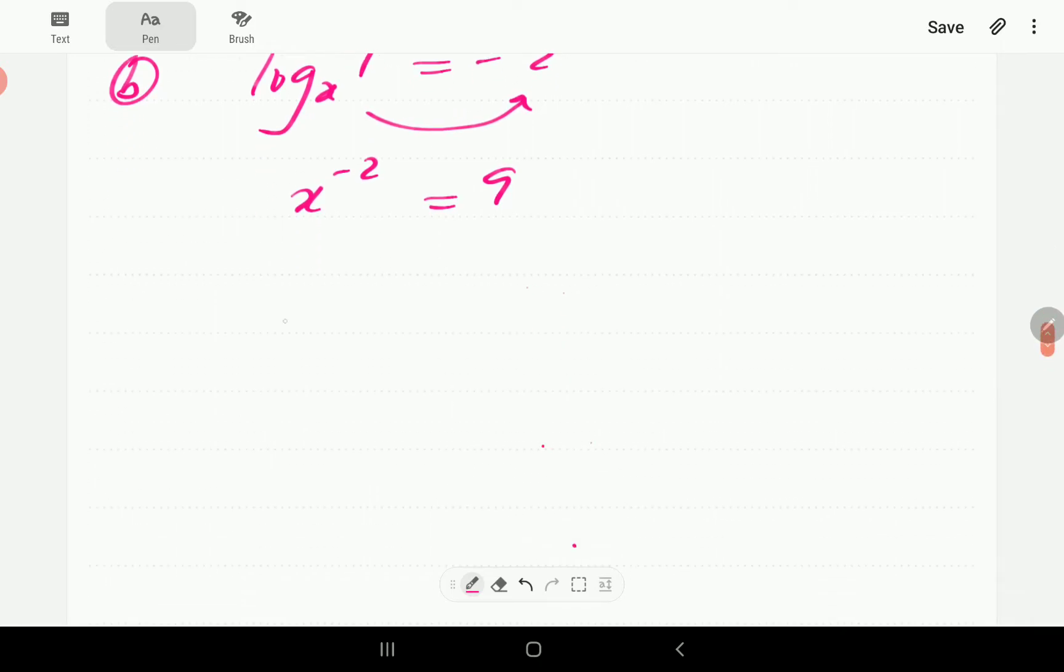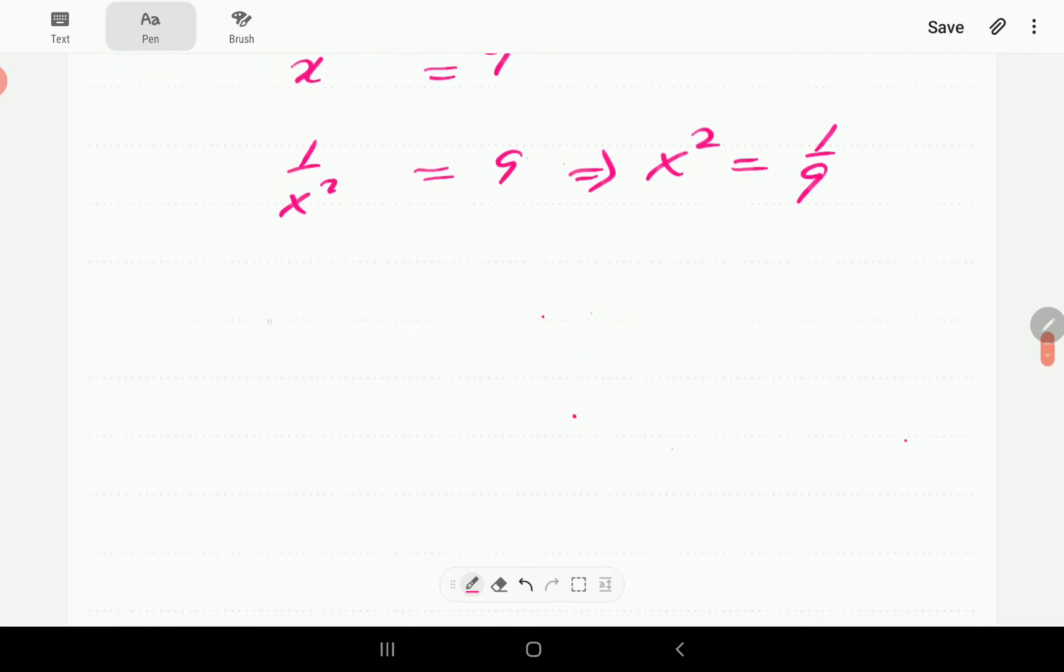So this is the same as 1 over x squared is 9, or x squared is 1 over 9. If we take the square root, it means x is going to be plus or minus 1 over 3.